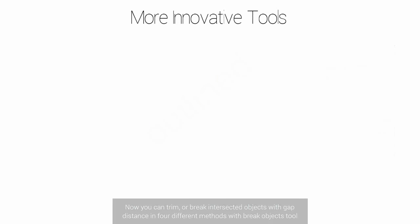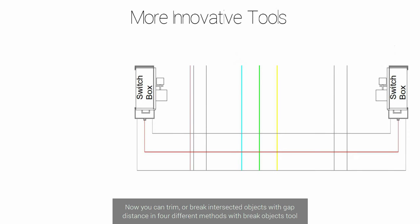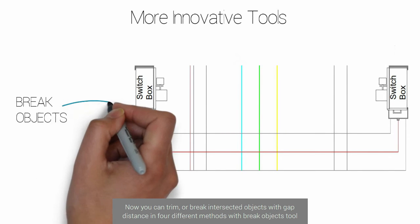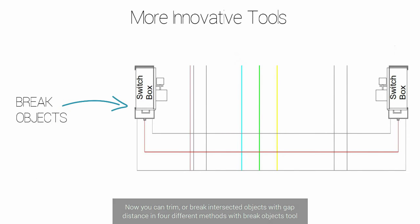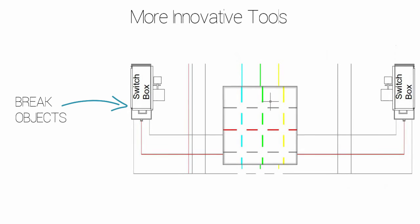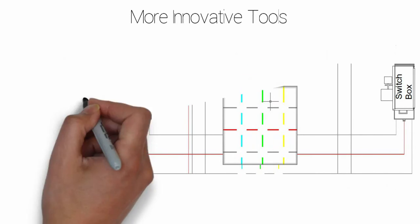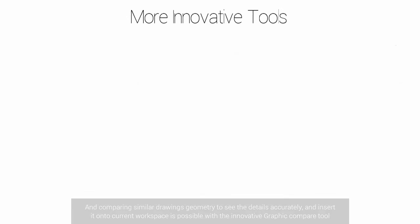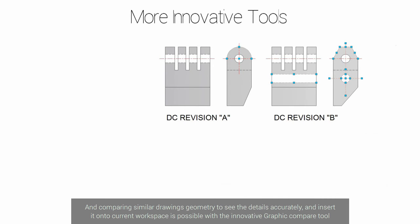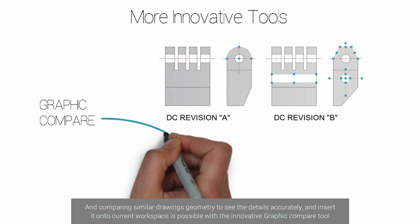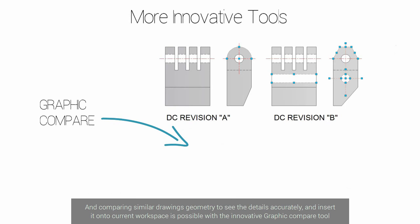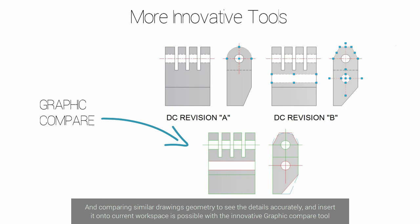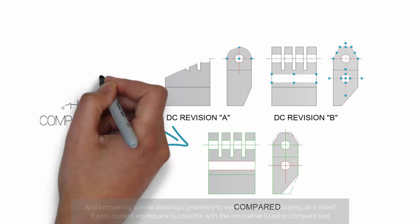Now you can trim or break intersected objects with gap distance in four different methods with the break object innovative tool. Comparing similar drawing geometry to see the details accurately and insert it onto the current workspace is possible with the innovative graphic compare tool.